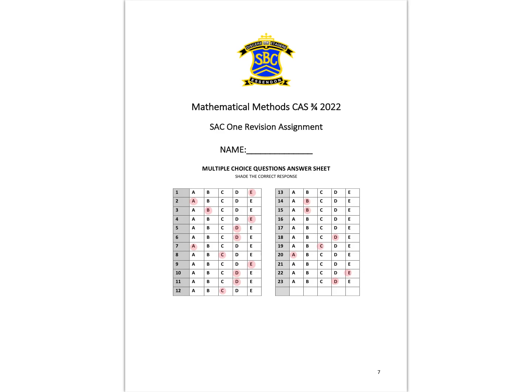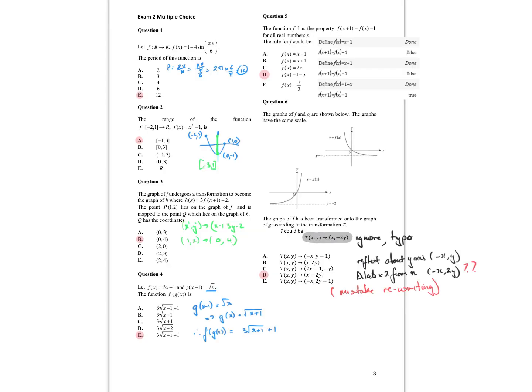Onto our multiple-choice. I've tried to include CAS shots as I find them appropriate. The period of the function is just 2π on n, which ends up with 12.